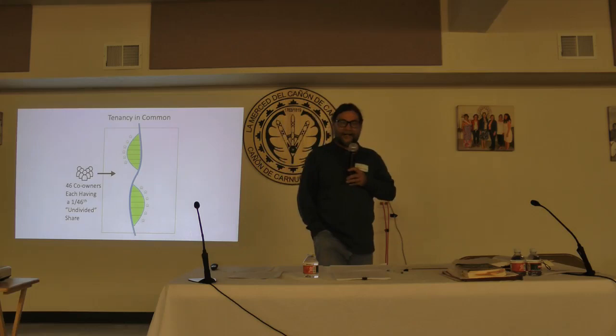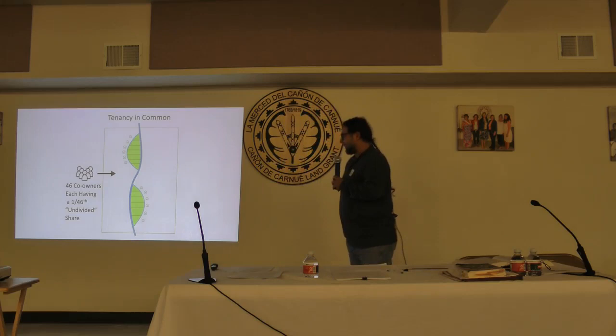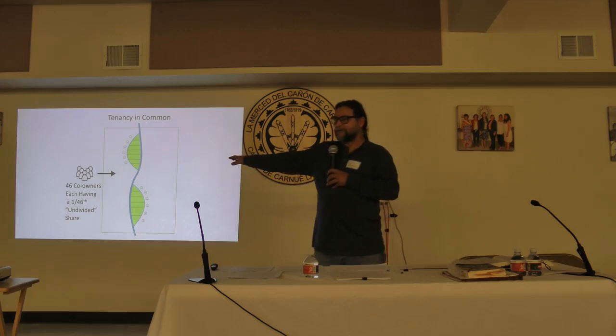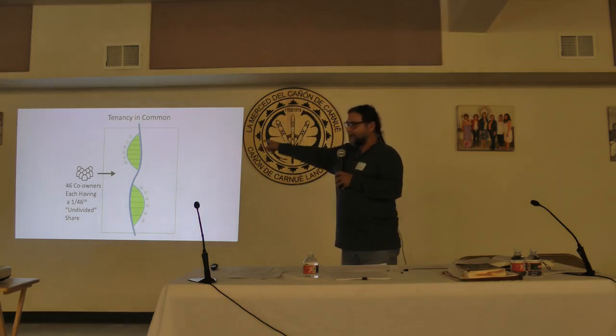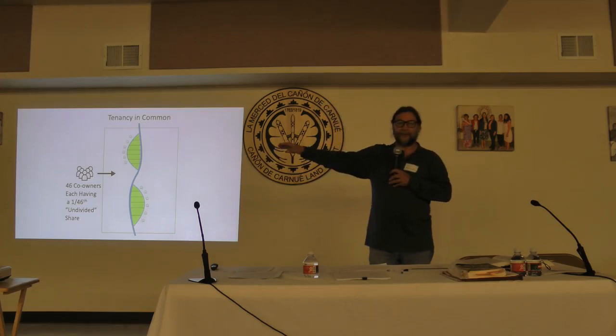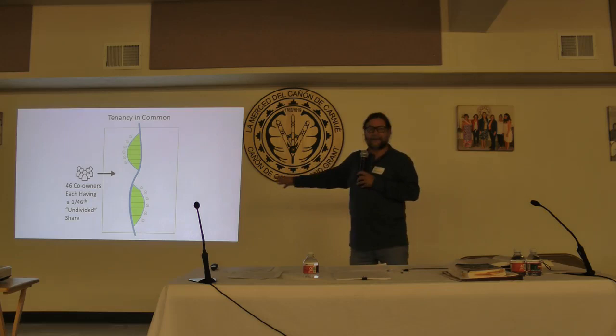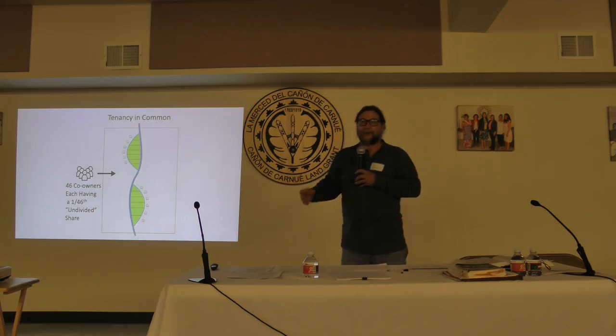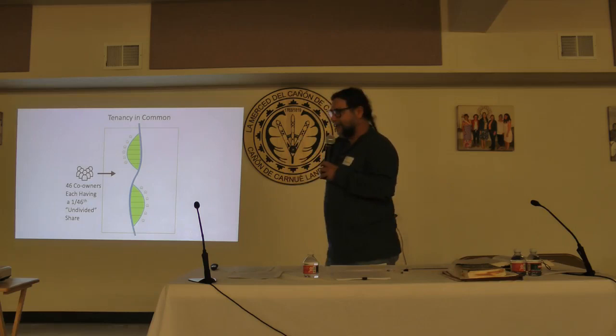Some land grants got confirmed by the federal government as a tenancy in common. A tenancy in common looks very similar, except that with 46 original grantees, everything that's not green or a house is owned by 46 identifiable individuals, each of whom owns 1/46 of that unallotted land. You might ask: what's the difference? The major difference is the application of the partition statute.